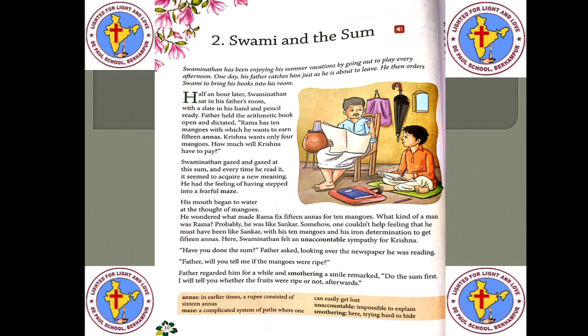In the story Swami and the Psalm, a young boy named Swaminathan is attempting to solve a problem from an arithmetic book. His father reads out to him that someone named Rama has 10 mangoes with which he wants to earn 15 anas. Krishna wants only 4 mangoes — how much will Krishna have to pay? Let's read on to find out whether Swami was able to solve the sum or not.